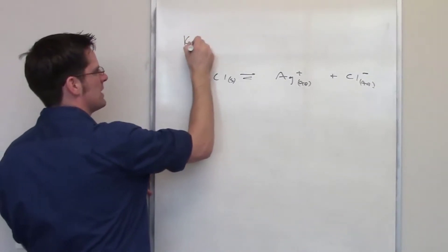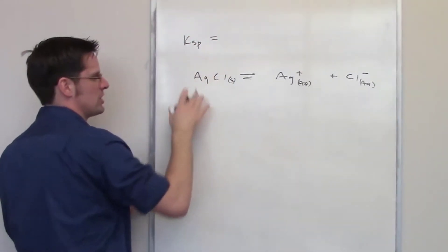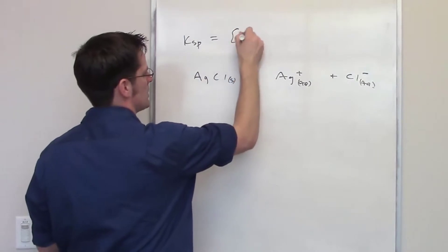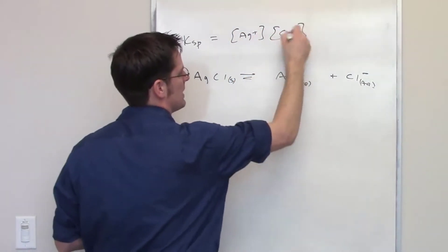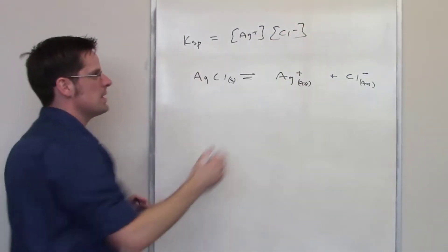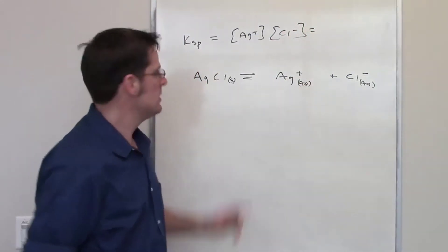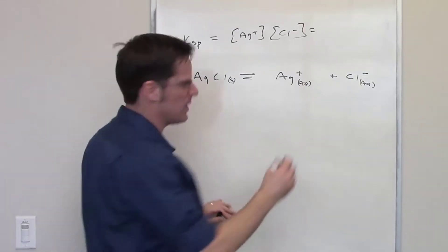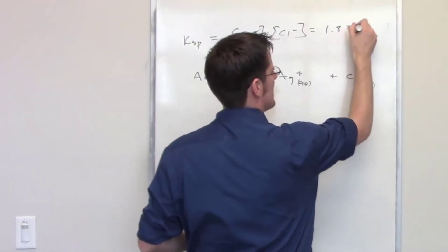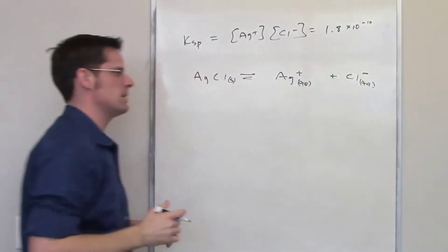Ksp is the molar solubility product constant. The molar solubility product constant in this case is going to be equal to the individual concentrations of my silver cation multiplied by that of my chloride anion. It tells me in this problem the solubility constant Ksp is equal to 1.8 times 10 to the negative 10, so I have an actual number here.